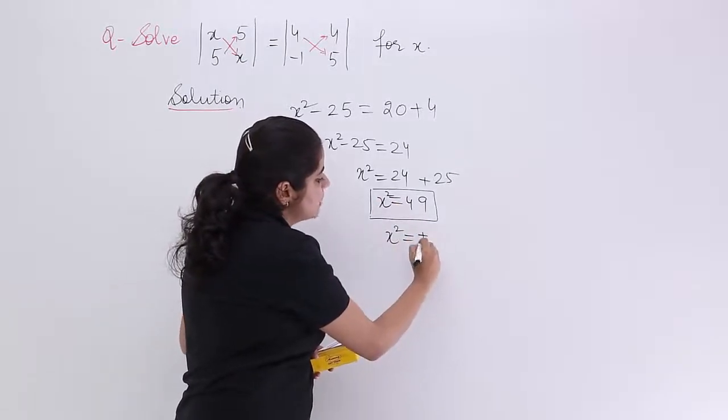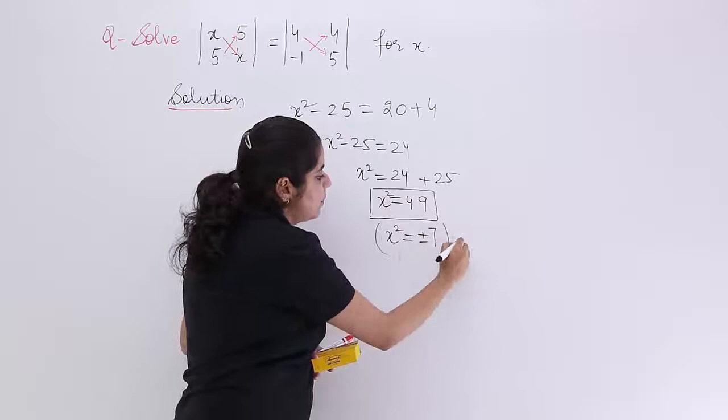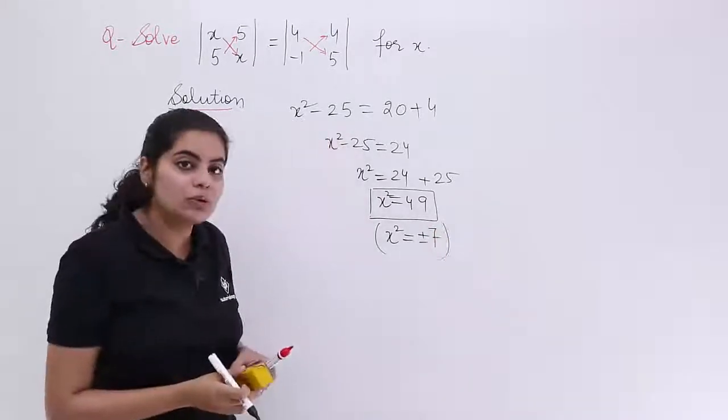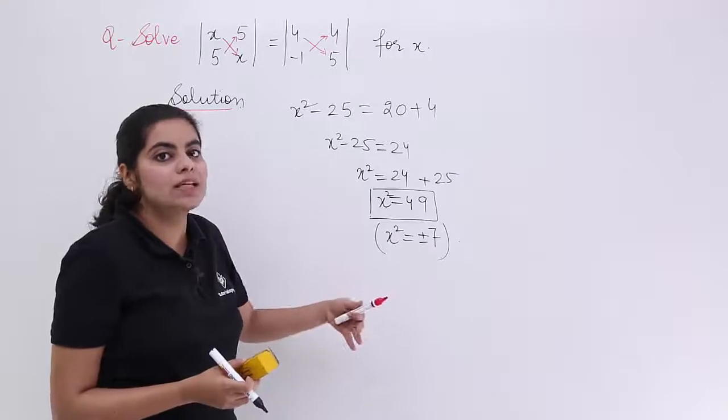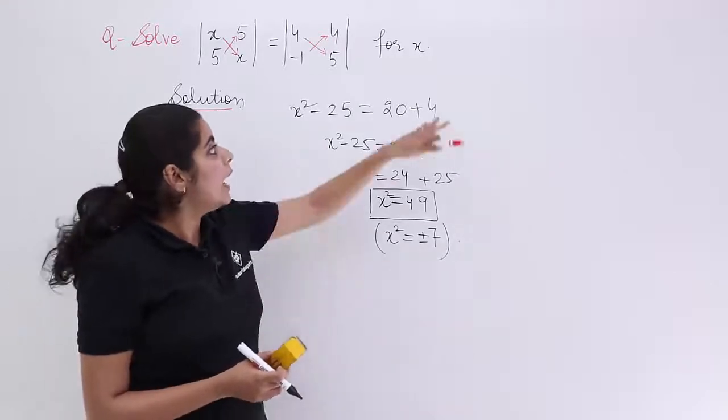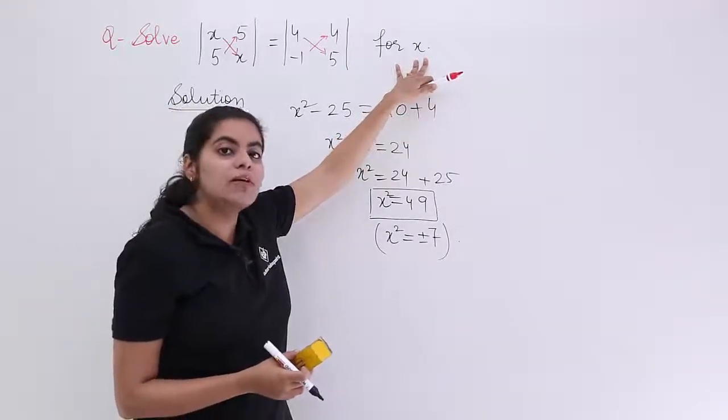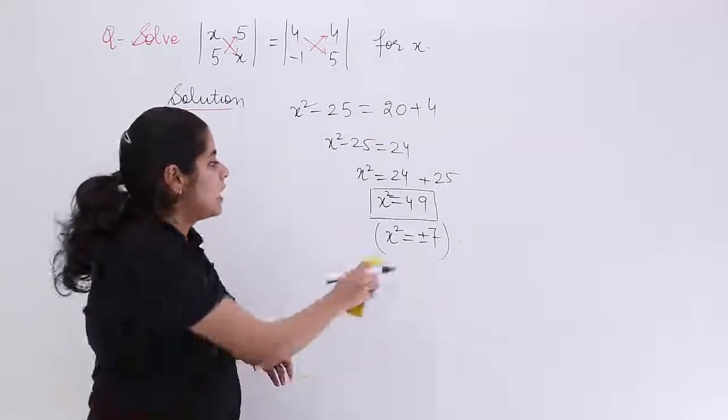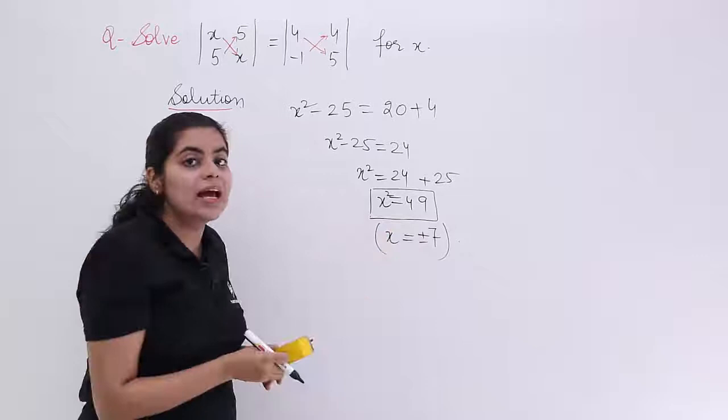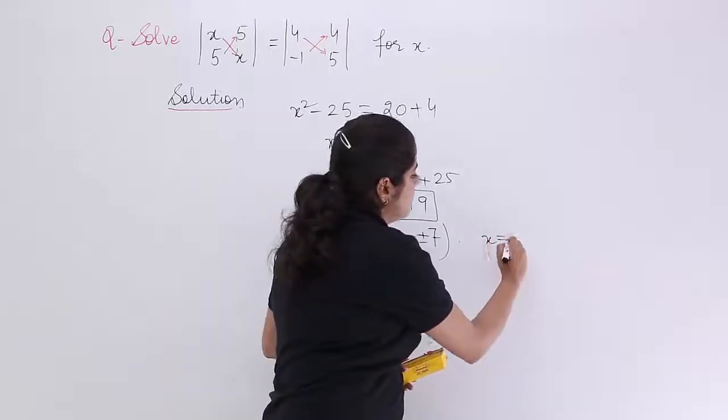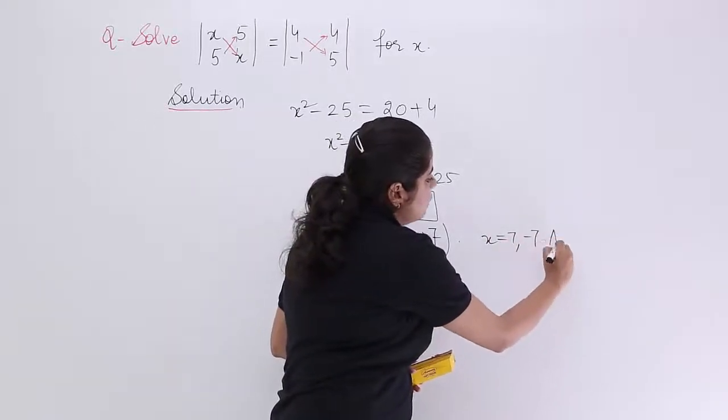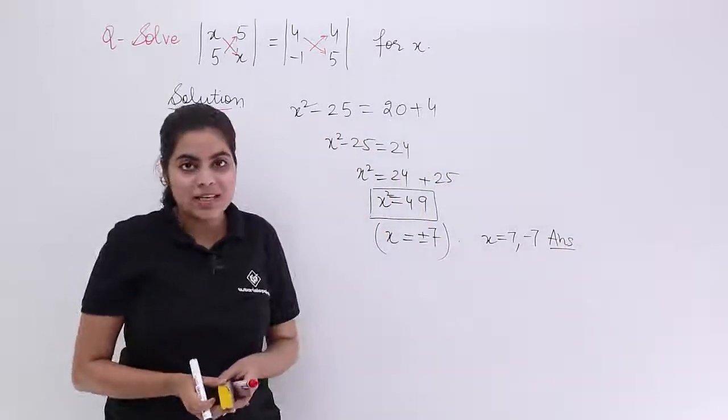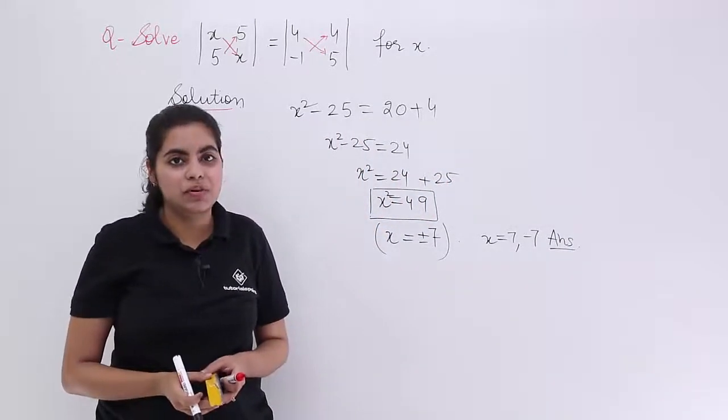x is equal to plus or minus 7. Why plus or minus 7? Why not only plus 7? Because I know that minus 7 into minus 7 is also plus 49. And there is nothing mentioned that you have to take only positive values. So there are two answers to this question. x = 7 and x = -7. And this is my answer to this question based on the topic of evaluation of determinants.